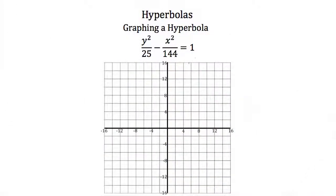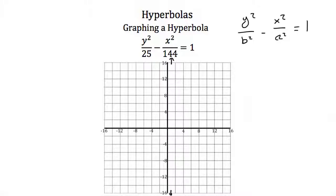The last thing we have to do in this tutorial is graph a hyperbola. We'll graph y squared over 25 minus x squared over 144 equals 1. Since x squared is being subtracted, this hyperbola opens in the positive and negative y direction. The standard form is y squared over b squared minus x squared over a squared equals 1, so b squared is 25 and a squared is 144, meaning b equals 5 and a equals 12.